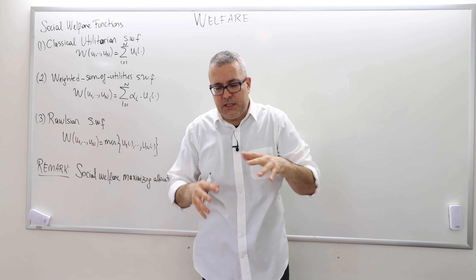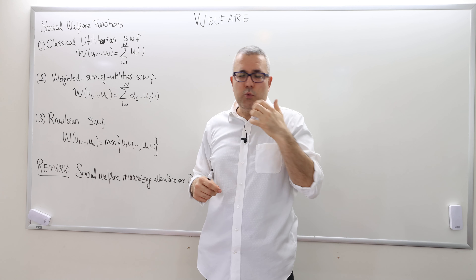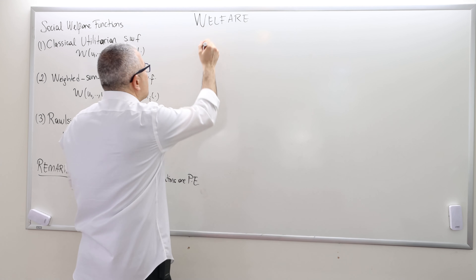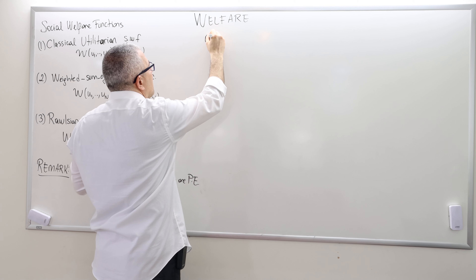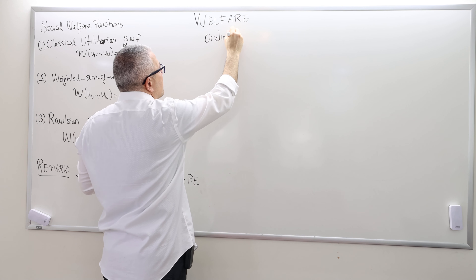So what is a social welfare function? Remember, there are different ways of aggregating preferences. One way is by using voting rules. Another way is what we call social welfare functions. What is the difference between the two?